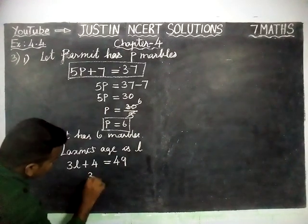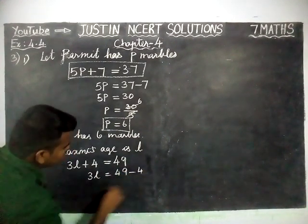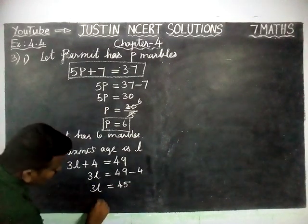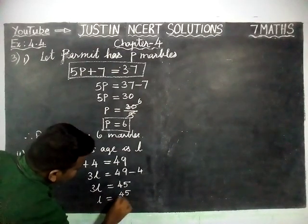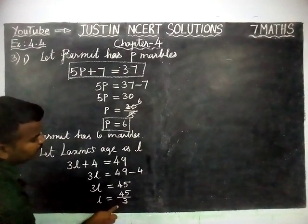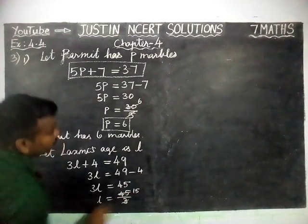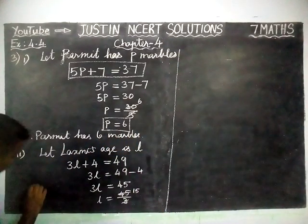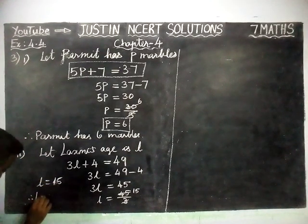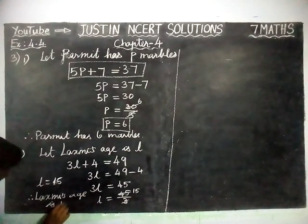Now, 3L = 49 − 4, this plus 4 is going to the right-hand side so minus 4. 3L = 49 − 4 = 45. L = 45 ÷ 3, because multiplication 3 is going to the right-hand side so it becomes division. 15 threes are 45, so L = 15. Therefore, Lakshmi's age is 15 years.